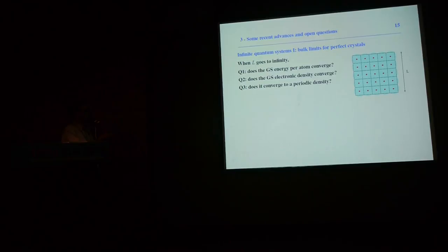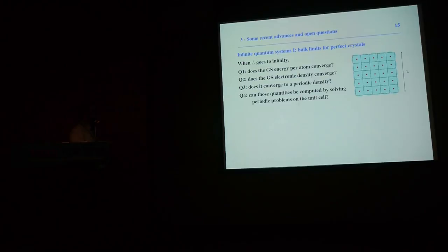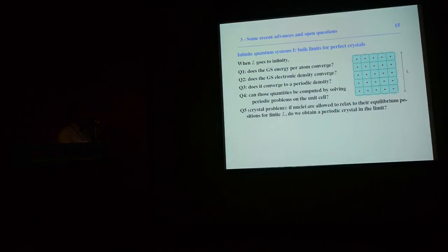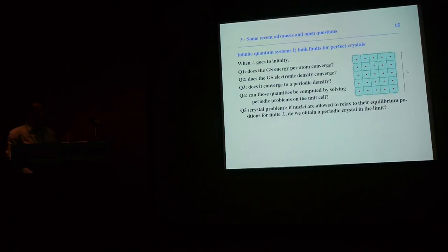The natural questions are: does the ground state energy per atom converge in this limit? Does the ground state density converge, and if so, to a periodic density? Can we compute this density by solving a simpler problem on the unit cell, perhaps with periodic boundary conditions? An additional, more difficult question is the Crystallization problem: if we let the nuclei relax to their equilibrium positions before letting L go to infinity, do we recover a crystal in the limit?